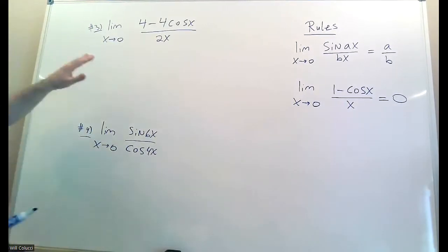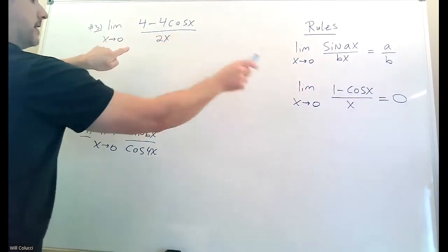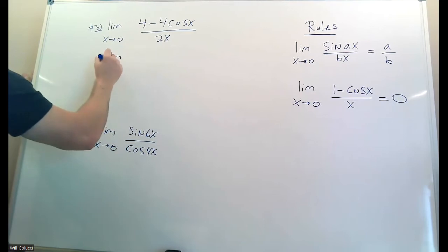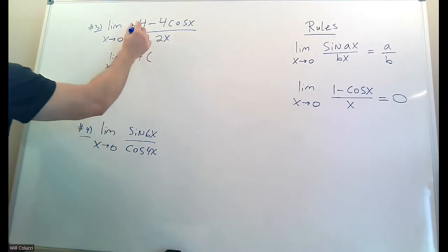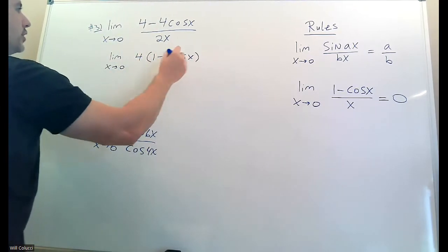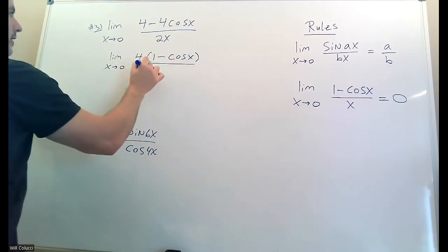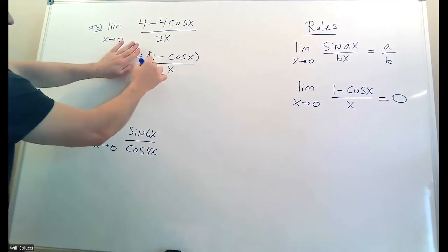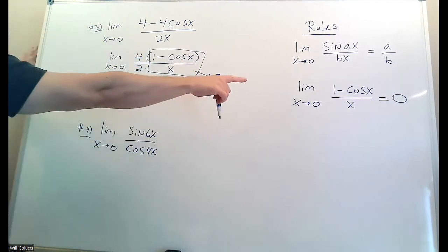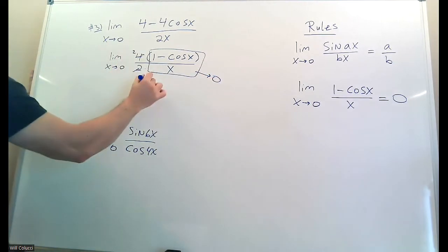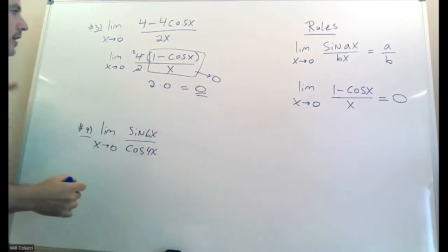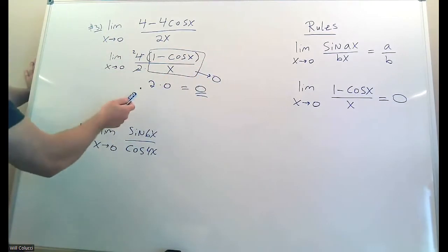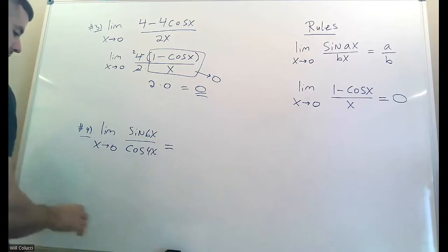The torture continues. Problem 3 looks a lot like the rule with x going to zero. On top, each term has a four, so factor the four out front. Your goal is to make each part look like the standard identity. Divide the four away from what's inside. That creates the standard form — that limit equals zero by the rule. Then you have a two remaining, and two times zero is zero. Show that justification.